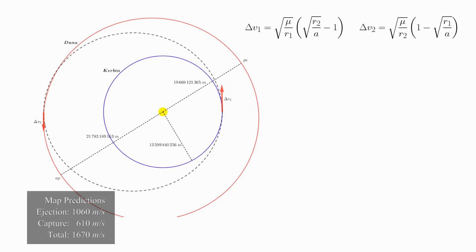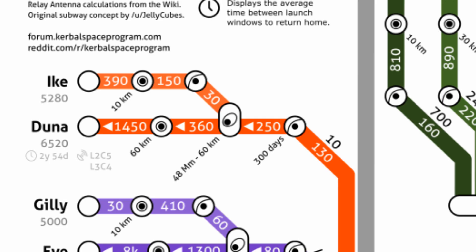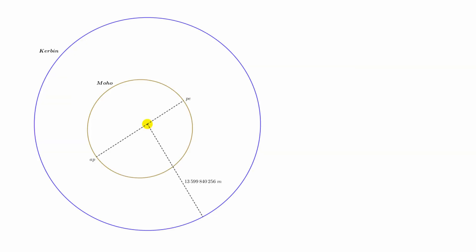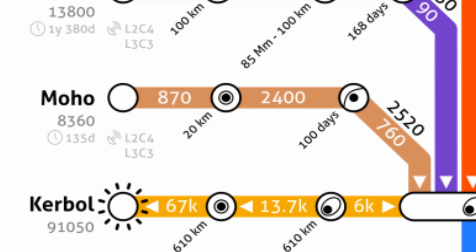With DUNA last episode, we found that if we approximated DUNA's orbit to a circle, we calculate much the same numbers we see on the delta-V map. If you follow the same process for Moho, you will again find that you get pretty much the same numbers as the map for the ejection and capture costs. Instead of repeating that whole process, I want to instead concentrate on this 2520 meters per second for the inclination change. Where does this number come from?